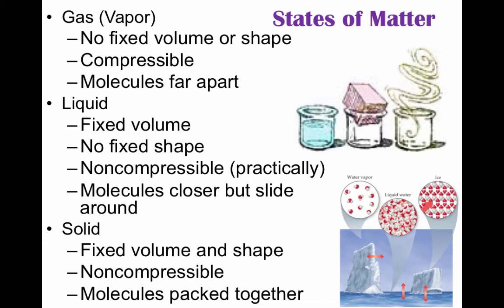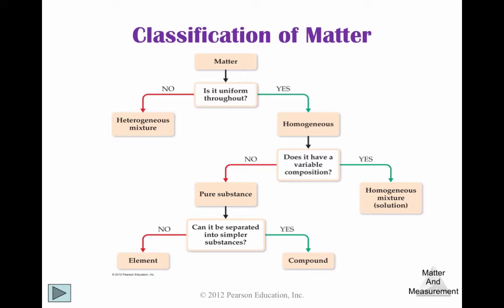Here we have the classification of matter flowchart. At the top we start with matter, and if you follow this flowchart you can determine how to classify any type of matter. The first thing we look at is: is it uniform throughout? If yes, that means it is homogeneous — meaning it has the same composition throughout. If it's homogeneous, we ask: does it have a variable composition? If it's made of more than one thing, like Kool-Aid and water, that would be a homogeneous mixture, which is a solution.